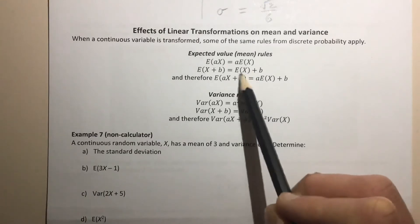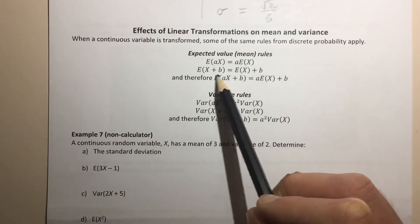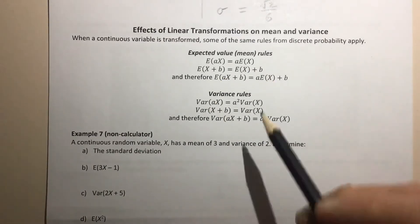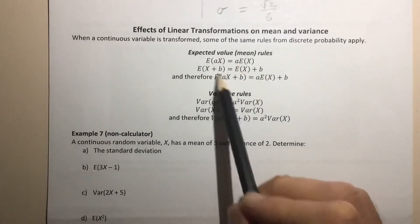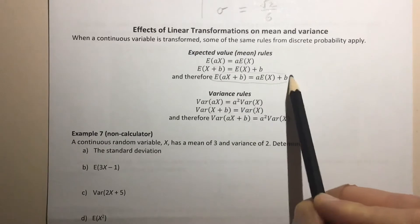so E(aX) = a·E(X). The expected value of X + b is equal to, well, what that's going to do is just take the expected value of X and add b to it. It's like saying, if you add 5 to your entire distribution, you're going to increase the mean by 5. And therefore,